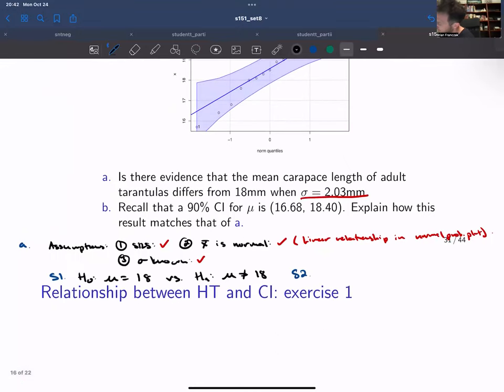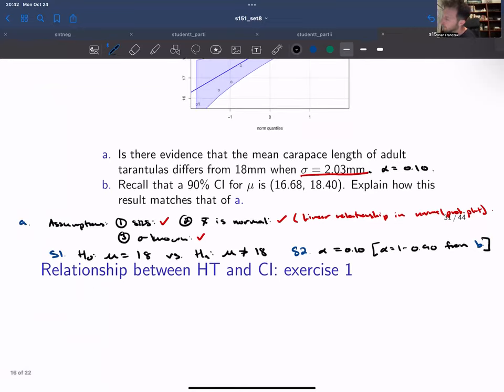We are going to test using alpha equals 0.1. We're using this alpha because I want it to match up with the confidence interval. You can also think of this as alpha equals 1 minus 0.9 from part B. But most often, it'll be stated clearly the significance level.